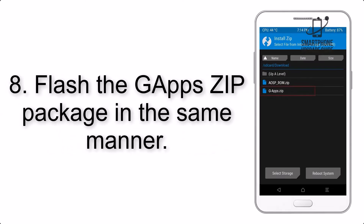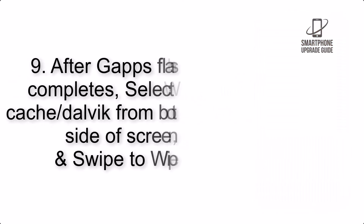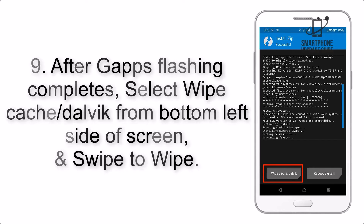Step 8: Flash the GApps zip package in the same manner. Step 9: After GApps flashing completes, select Wipe Cache and Dalvik from the bottom left side of the screen, and swipe to Wipe.